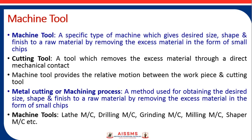Next is the metal cutting or manufacturing machining process. A method used to obtain desired shape, size, and finished part from a raw material by removing excess material in the form of small chips and burrs is called a machining process — a process by which we can convert raw material into final finished parts. There are several kinds of machine tools available such as lathe machine, drilling machine, grinding machine, milling machine, and shaper machine.